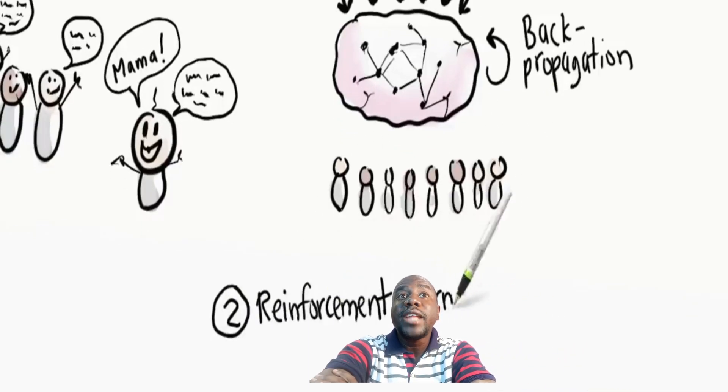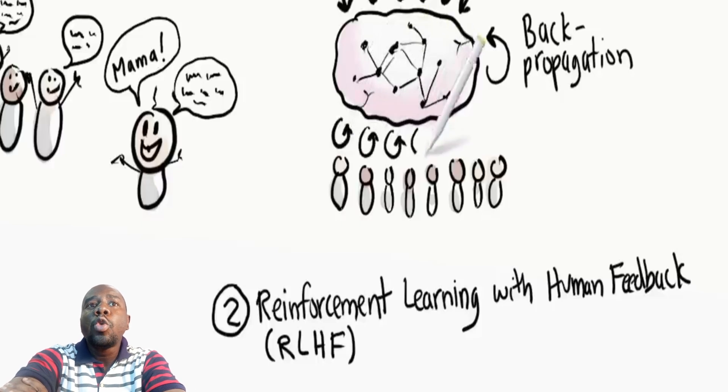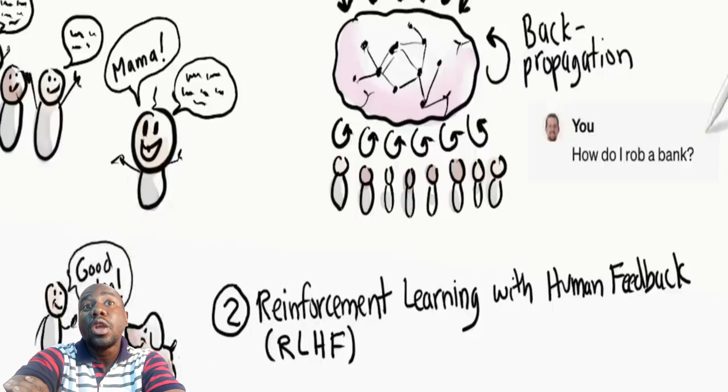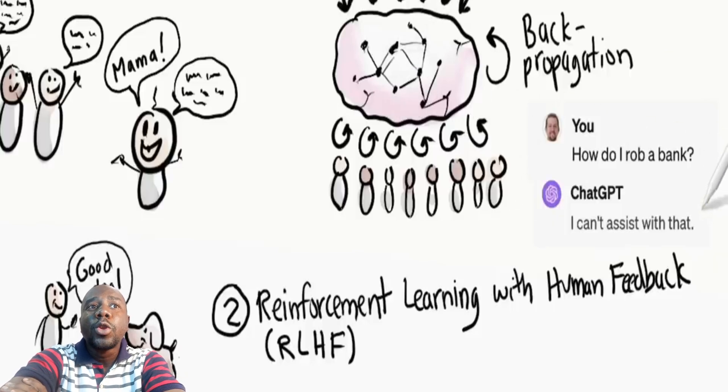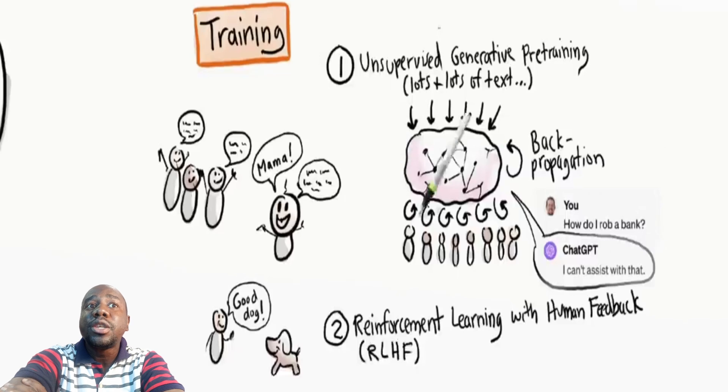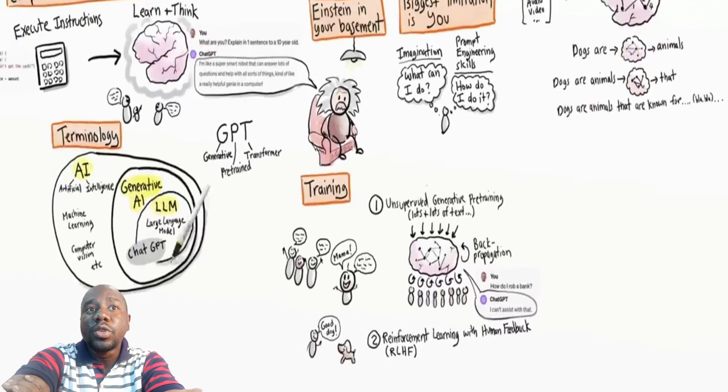To become truly useful, a model also needs to undergo human training. This is called reinforcement learning with human feedback, and it involves thousands of hours of humans testing and evaluating output from a model and giving feedback, like training a dog with a clicker to reinforce good behavior. That's why a model like GPT won't tell you how to rob a bank. It knows very well how to rob a bank, but through human training it has learned that it shouldn't help people commit crimes. When training is done, the model is frozen.